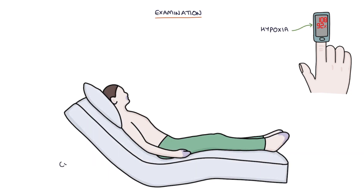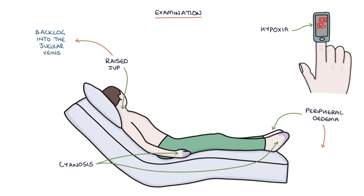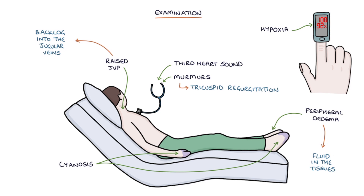It's important to examine patients for signs of cor pulmonale. These signs include hypoxia and cyanosis, a raised JVP due to a backlog of blood into the jugular veins in the neck, and peripheral edema from backlog of blood into the peripheral venous system causing fluid leakage into the tissues. They might have a third heart sound, and if they have tricuspid regurgitation — where the tricuspid valve lets blood back from the right ventricle into the right atrium — you can hear a pansystolic murmur.